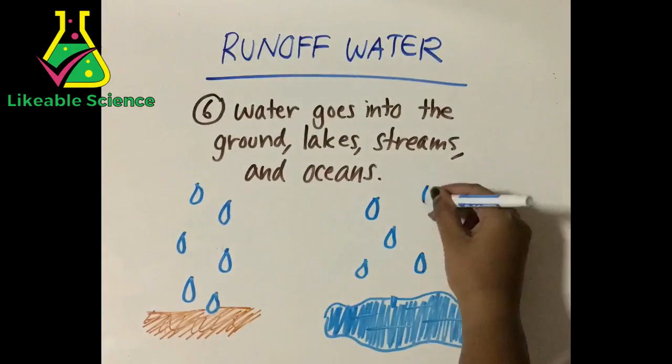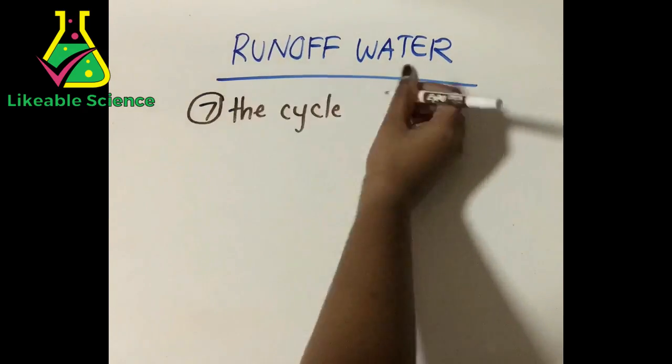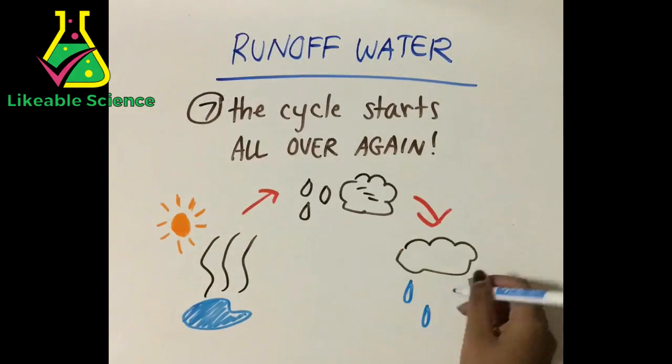Last but not least, when water comes down, it runs off the surface and moves through the ground. Eventually it reaches lakes, streams, and oceans, and the water cycle starts all over again.